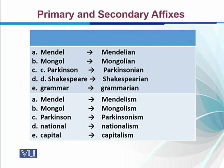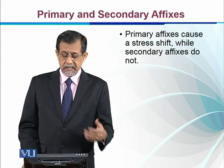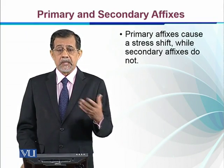Now let us look at the secondary affix. For example, 'Mendel' with -ism becomes 'Mendelism' — the stress remains on 'Men,' there is no shift. So in the case of a secondary affix, we do not have a shift in word stress. Consider: Mongol → Mongolism, Parkinson → Parkinsonism, national → nationalism. The stress remains at the same syllable even after attaching the secondary suffix. Primary suffixes cause a stress shift, while secondary suffixes do not.